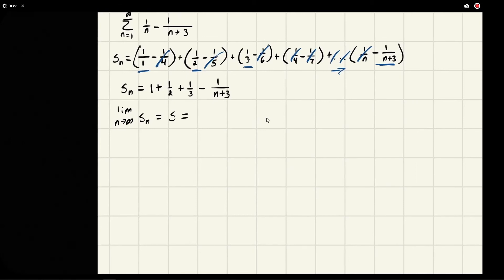And I'm going to scoot this over because I forgot to write that the limit as n goes to infinity. And what is this? 1 plus 1/2 plus 1/3 gives us 11 over 6 minus 1 over n plus 3.